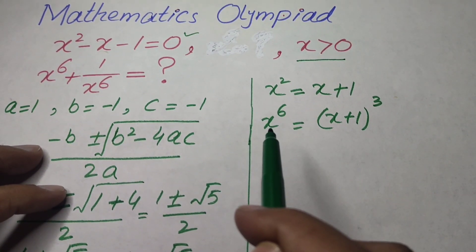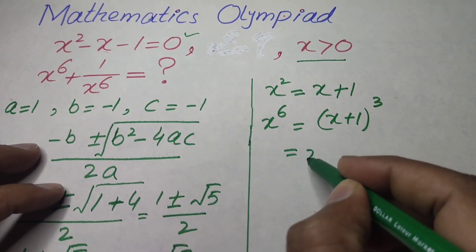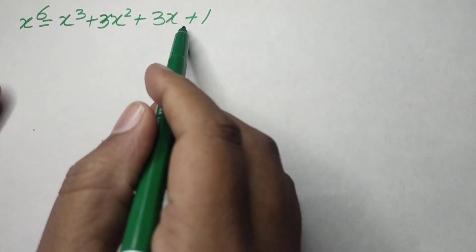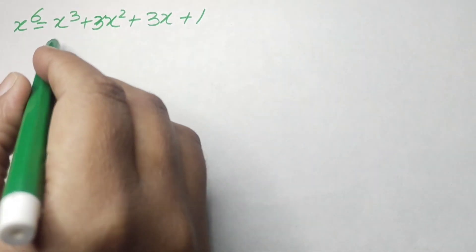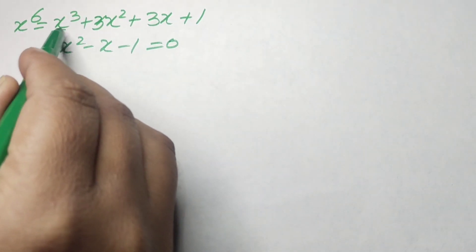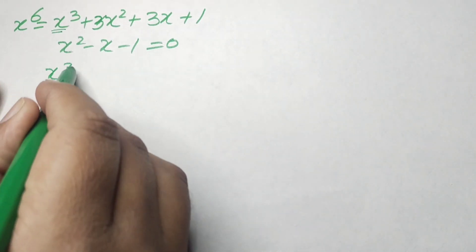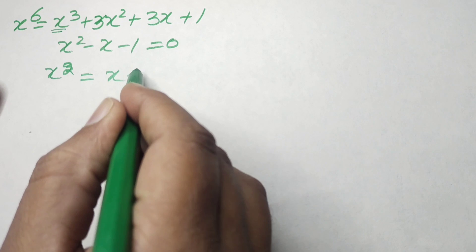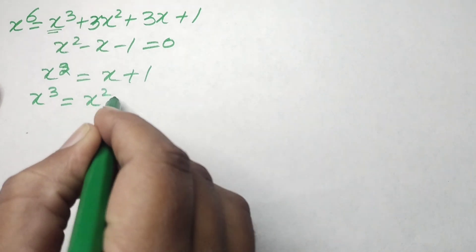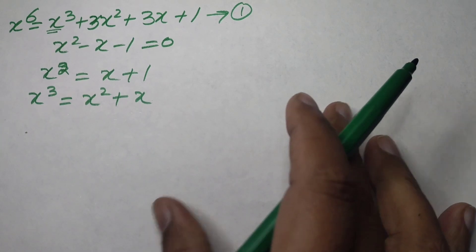Expanding (x + 1)³ gives x³ + 3x² + 3x + 1. To find x³, we use x² = x + 1 and multiply both sides by x to get x³ = x² + x. We label this equation (1) and will substitute the value of x³ into the expansion.